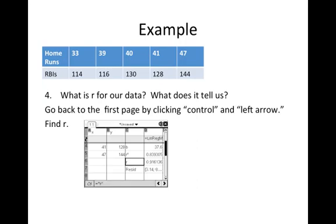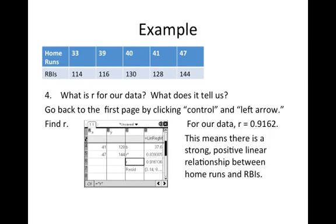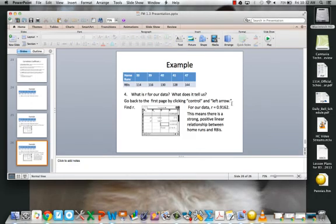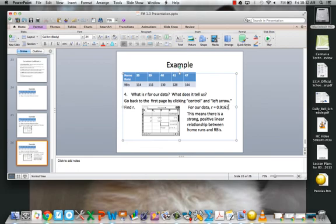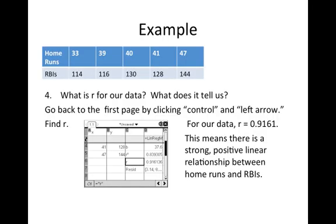What is R for our data and what does it tell us? We're going to go back and look at your spreadsheet page and you get R equals 0.9161. This means because it's close to one that the relationship is strong. The absolute value is close to one. So even if it was negative 0.9161, the strength would be strong. But because R is positive, it means you have a strong positive linear relationship between home runs and RBIs. It's really important that you put linear in there. You want to have how strong or weak it is, whether it's positive or negative, and that it is linear. Whenever you're interpreting or saying what R means, you want to include all of those things.